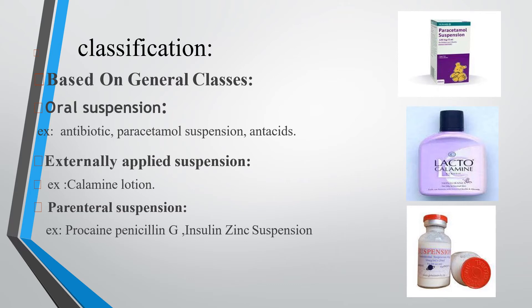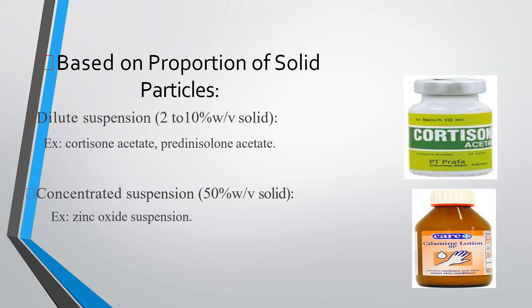The third class includes injectable suspensions such as procaine penicillin G and insulin zinc suspension. Based on proportion of solid particles, suspensions are classified as dilute suspension — 2 to 10 percent weight by volume of solids, example cortisone — and concentrated suspension — 50 percent weight by volume of solids, example zinc oxide suspension.